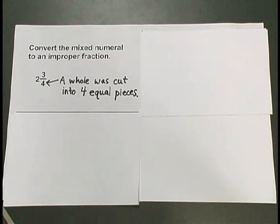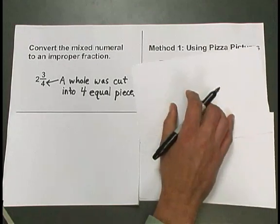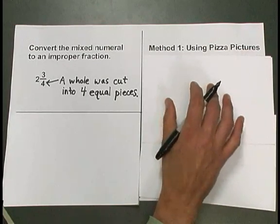We're going to change this mixed numeral to an improper fraction three different ways. The first way involves using pizza pictures.